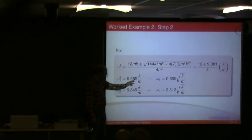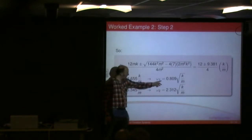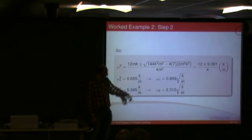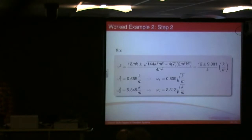Omega-1 is the square root of this, which is 0.809 root k upon m. And omega-2 is the square root of this, times by root k upon m. So that's 2.312 times k upon m. There's my natural frequencies.